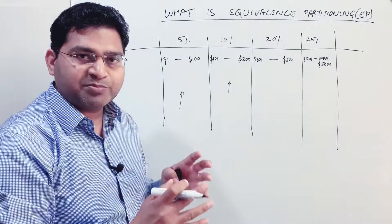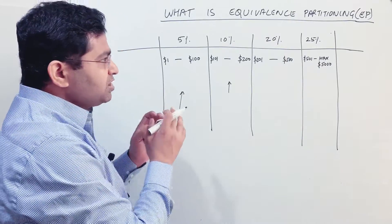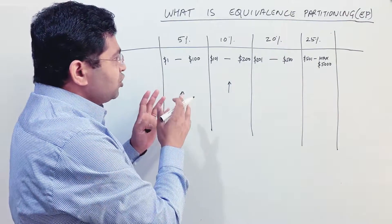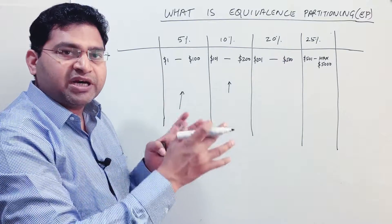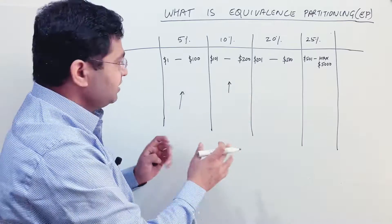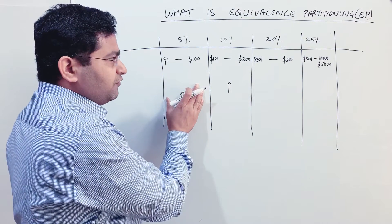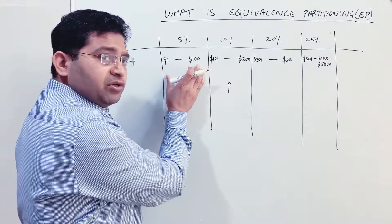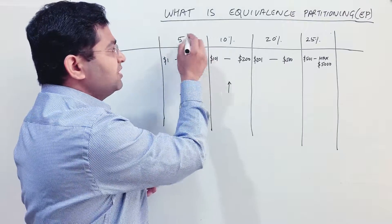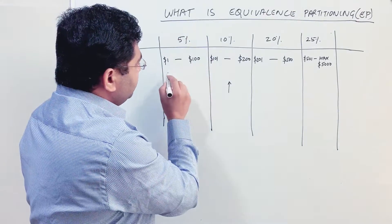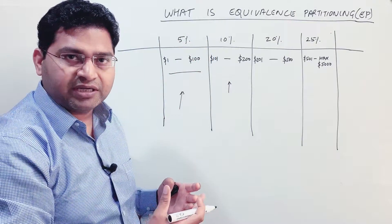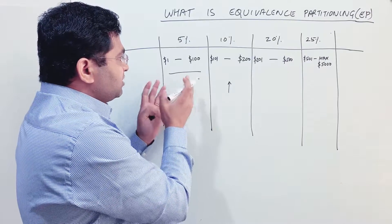When we divide a module that accepts certain values and produces certain outcomes based on those values into logical groups, that is known as equivalence partitioning. In this case, the discount module accepts a dollar purchase amount and based on that amount you get different discounts — the dollar amount is your input and the discount percentage is the output you want to verify.